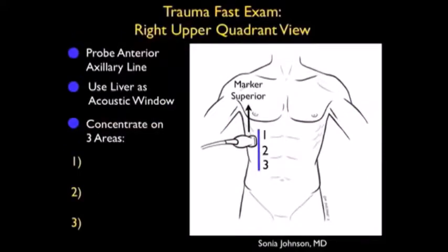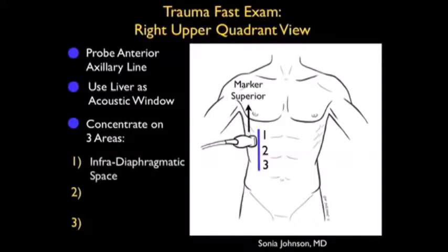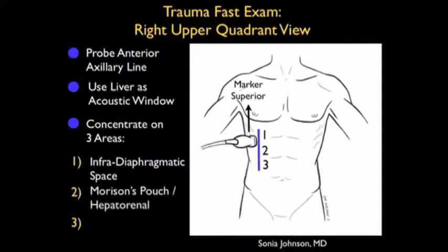Now let's take a look at a slide showing us how to perform the right upper quadrant view of the trauma FAST exam. We'll want to place the probe at about the anterior axillary line and, using the liver as an acoustic window, aim the probe down towards the bedside retroperitoneally to get a good view of these anatomical structures. It's best to have a small footprint probe that can easily sit between the ribs. This is a long axis view with the probe marker positioned superiorly.